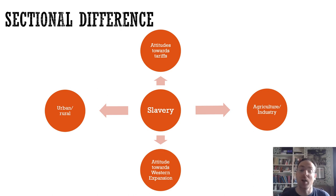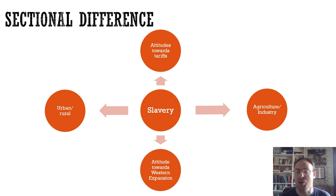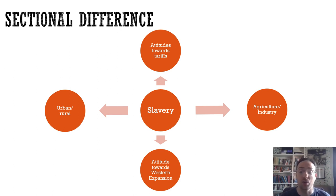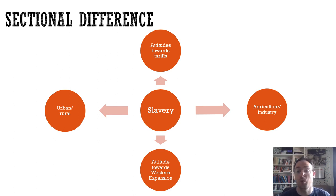Whilst the North saw the South as being backwards, the South looked at all the negatives of industrialization — the conditions in the cities and the way of life — and would look down their noses at that and say, 'That's just not for us. We can call it modern and progress if you like, but it looks terrible to us. We'd rather have our particular way of living.' The background of the two economies — one in the North based on free labour, and the South based on slave labour — led to those differences in the development of the economy.